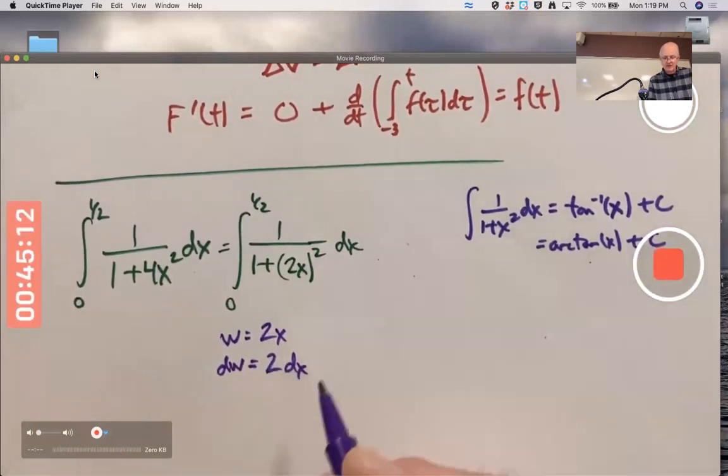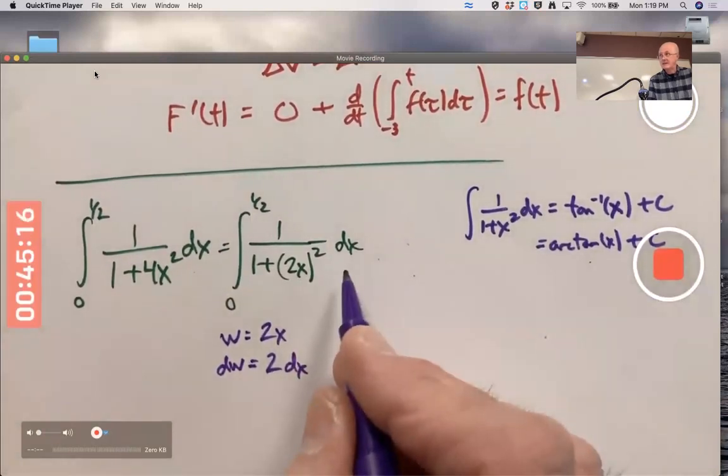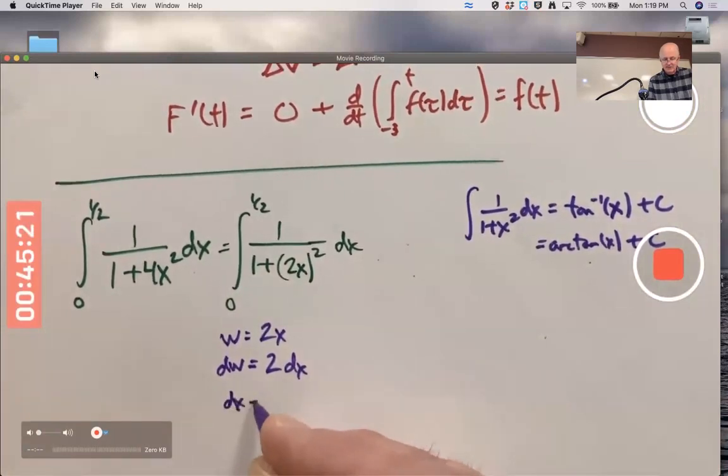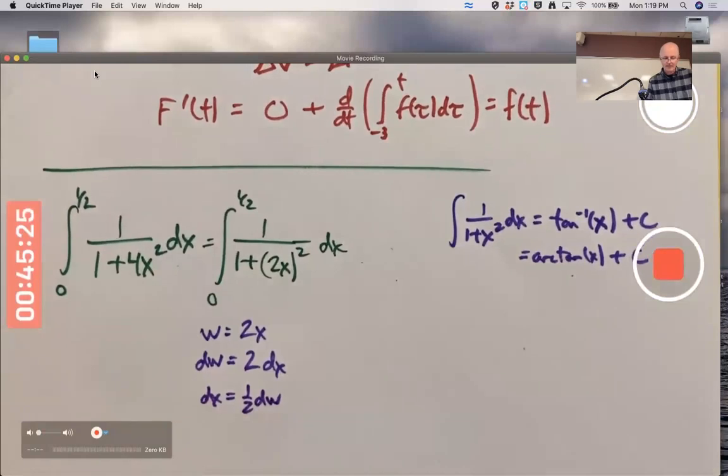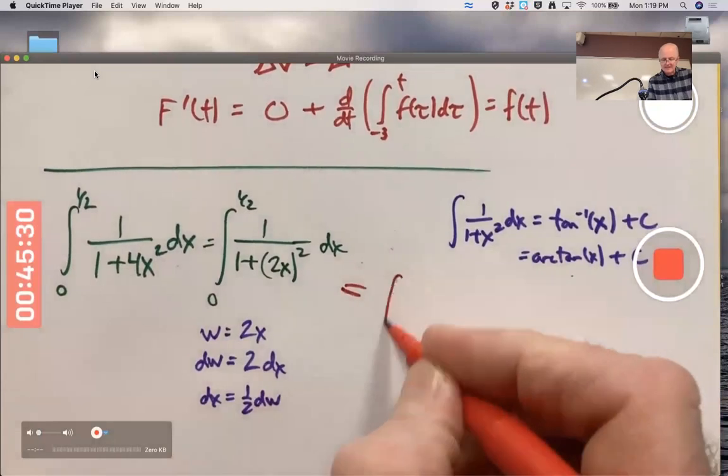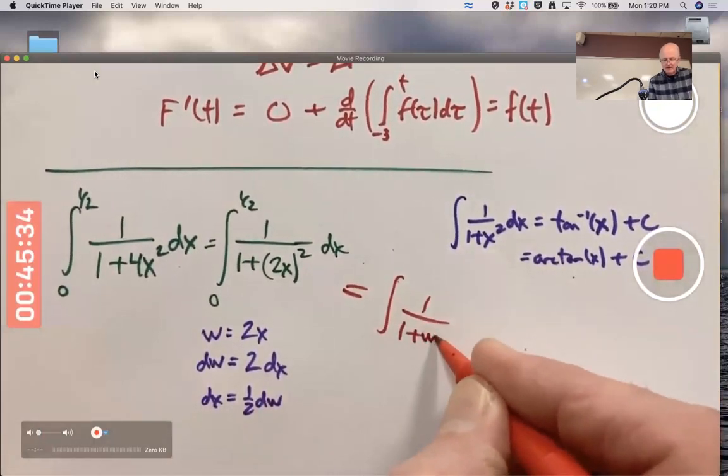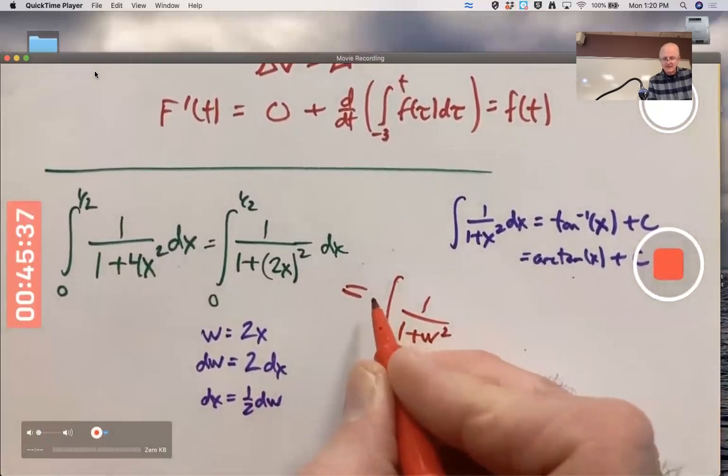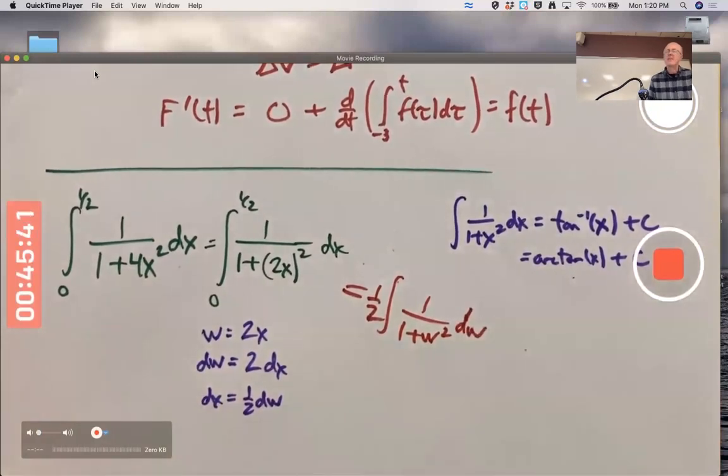If dw = 2dx, then dx = ½dw. So I do that - I replace 2x with w and replace dx with ½dw, and go ahead and bring the ½ in front. However, I can't stop there, right? This is a definite integral; that's an indefinite integral.